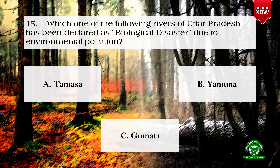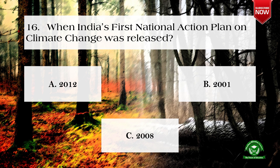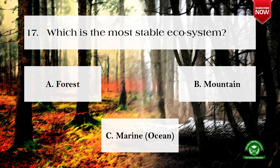Next question: which river of Uttar Pradesh has been declared a biological disaster due to environmental pollution? Options are: Tamasa, Yamuna, and Gomati. The right option is c) Gomati. Next question: when was India's first National Action Plan on Climate Change released? Options are: 2012, 2001, and 2008. The right option is c) 2008.